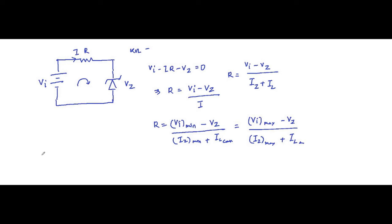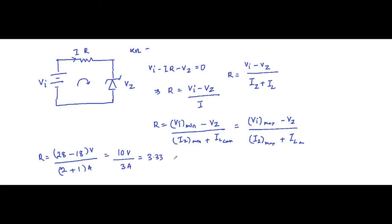Let us calculate using the maximum case first. The maximum input voltage is 28 volts, Zener voltage is 18 volts, maximum Zener current is 2 ampere, and the constant load current is 1 ampere. So R equals 10 volts divided by 3 ampere, which equals 3.33 ohms. We have found the value of R using V_I_max and I_Z_max.